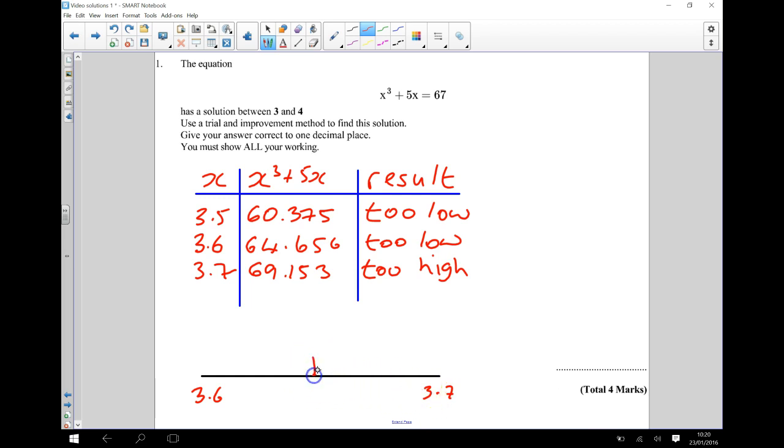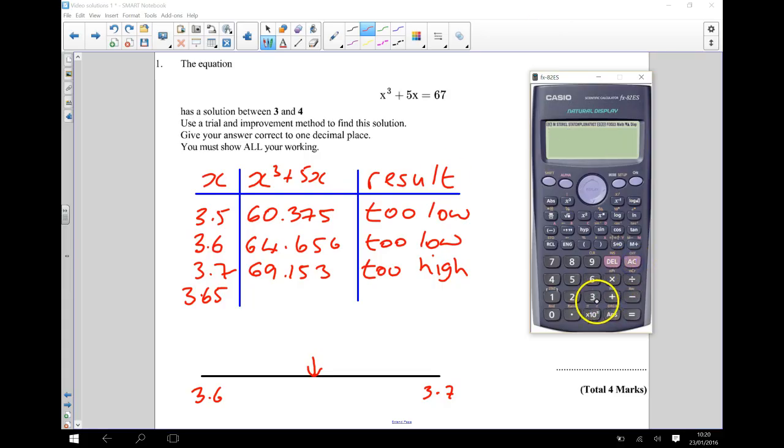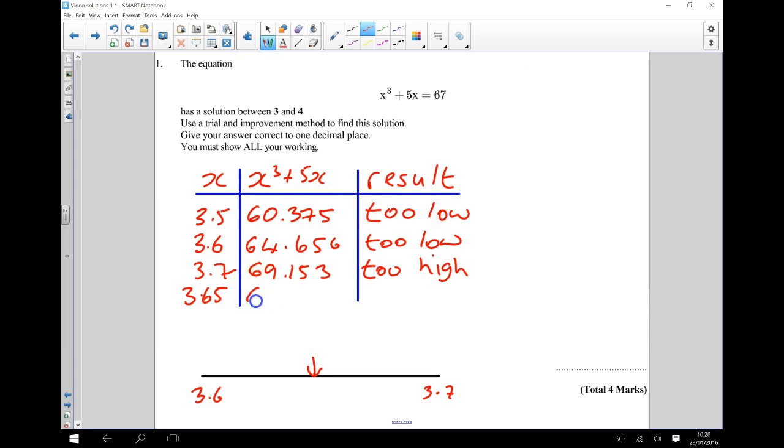So I'm going to try in between 3.6 and 3.7, which is 3.65. So 3.65 cubed plus 5 times 3.65. That gives me 66.877. 66.877. Now that there is lower than 67, so it's still going to be, it's now going to be too low.